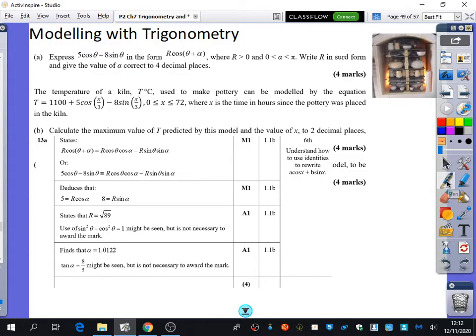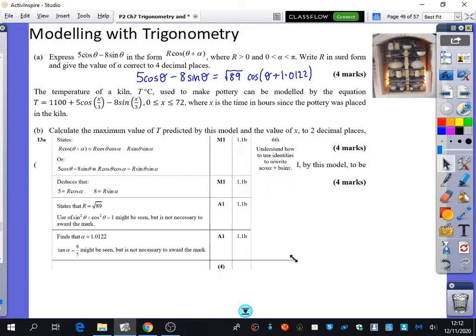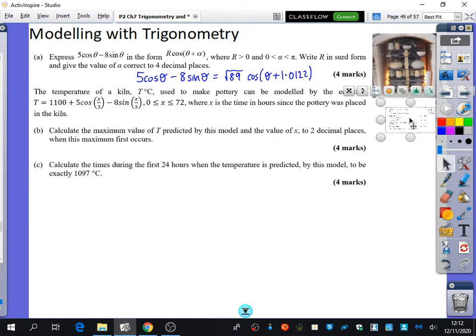They have found that r would be √89. So 5 cos θ - 8 sin θ is going to be √89 cos(θ + α), and α is 1.0122. I'm doing that to save us some time. That's for part A of the question - the harmonic identity. You all should be able to get those first four marks for this question, and we're hopefully going to be able to get all of these marks that we have here.